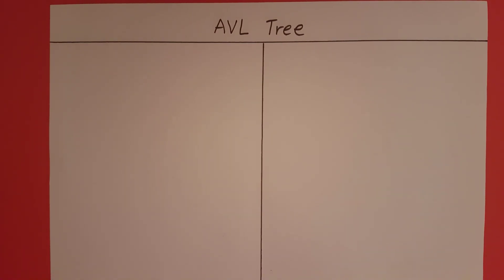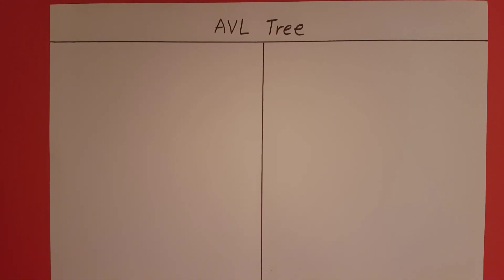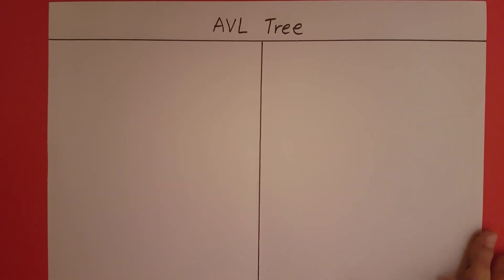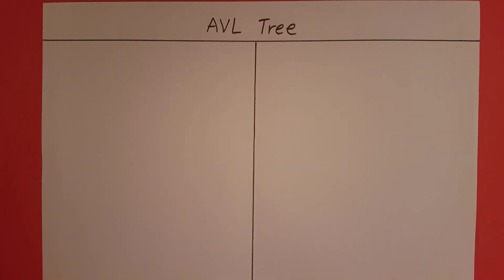An AVL tree is a balanced binary search tree. Since it is a balanced tree it will have minimum height, and since it has minimum height the search operation will have minimum complexity. We have already seen this in the previous video. So how does the AVL tree stay balanced?